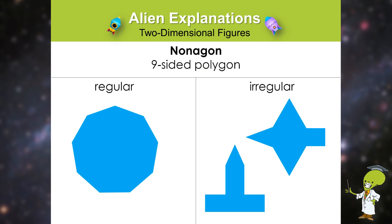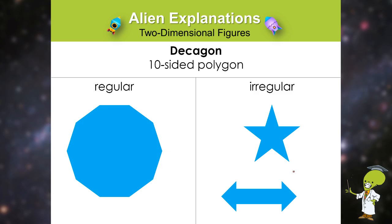And then the last shape we're going to review is the decagon. The decagon is the ten sided polygon.